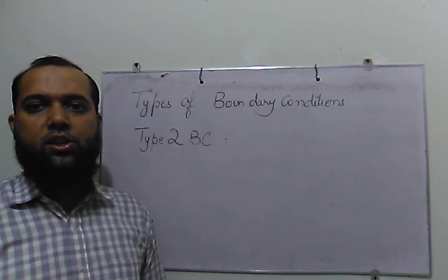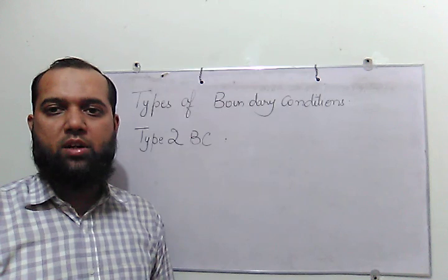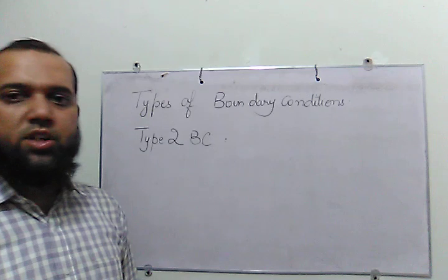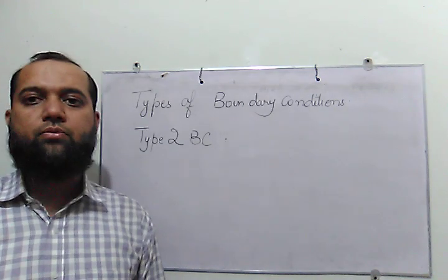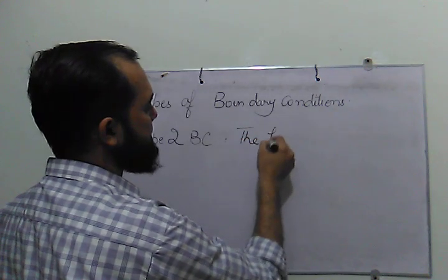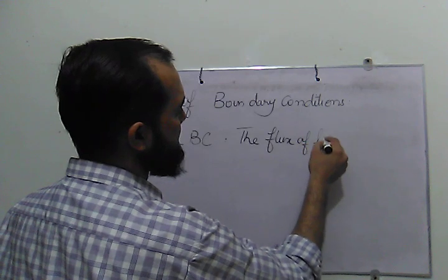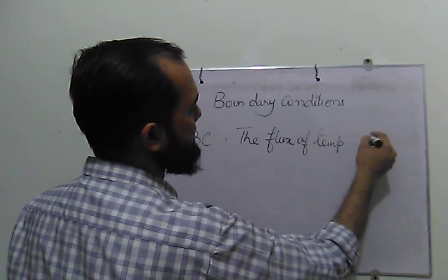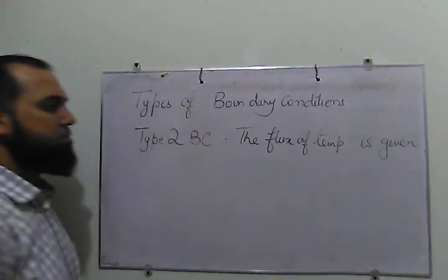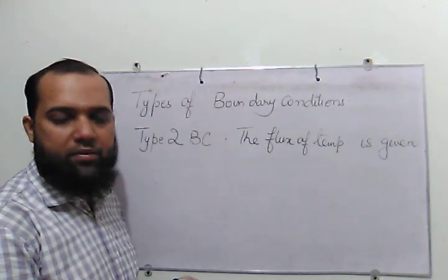In type 1 boundary condition, the temperature of the boundaries was given. In type 2 boundary condition, the rate of change or the flux of temperature is given, which means that the temperature is given in the form of a derivative.